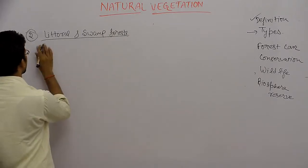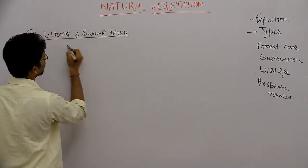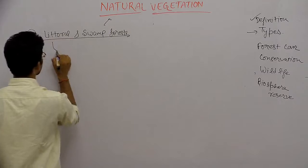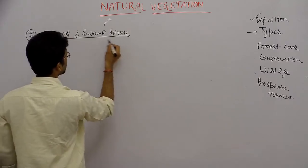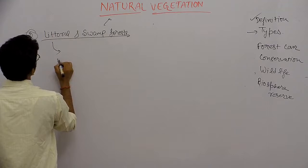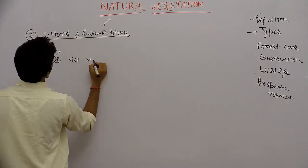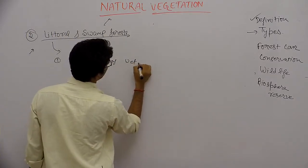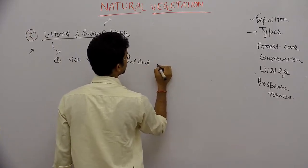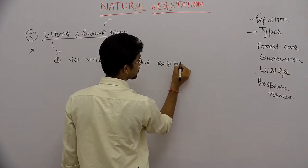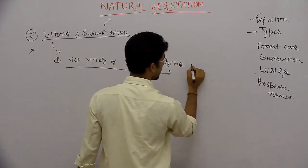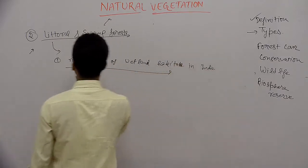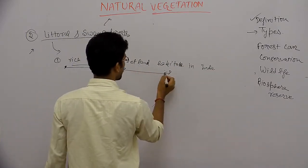Now we are going to study about Lottel and Swamp Forest, which is another category under natural vegetation. Lottel and Swamp Forest have a rich variety of wetland habitat. In India, there are a large number of rich varieties of wetland.